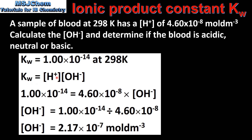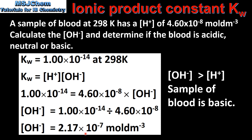Kw equals the concentration of the hydrogen ions multiplied by the concentration of the hydroxide ions. Inputting the value for Kw, we have 1.00 times 10 to the negative 14 equal to 4.60 times 10 to the negative 8 multiplied by the concentration of the hydroxide ions. Dividing Kw by the concentration of the hydrogen ions gives us the concentration of the hydroxide ions, which is 2.17 times 10 to the negative 7 moles per decimeter cubed. Since the concentration of the hydroxide ions is greater than the concentration of the hydrogen ions, the sample of blood is basic.